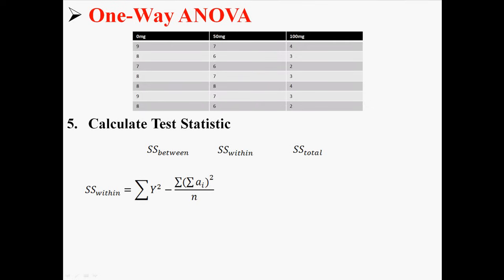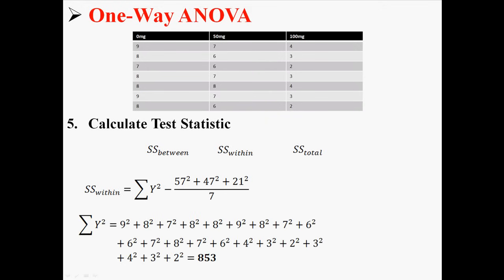Next let's do sum of squares within. Sum of squares within is sum of all y squared minus, hey this thing we already found it when we were calculating sum of squares between. We already know the second half of this. We just need to find sum of all y squared. What that means is you have to square every individual value and then add them all together. So our sum of y squared is 853. That's the first part of this equation. So now solving for sum of squares within, we get 10.29.